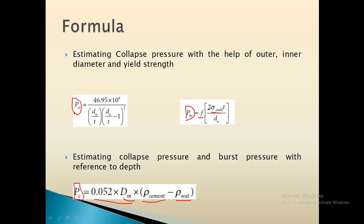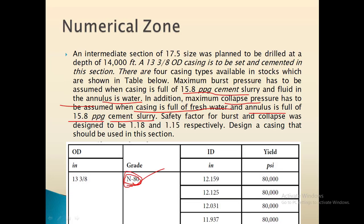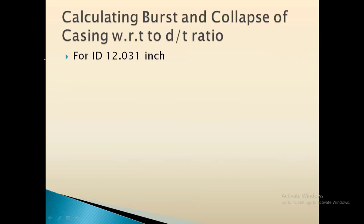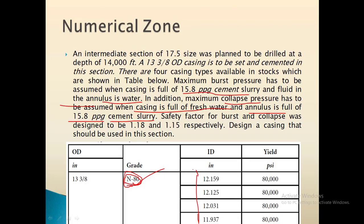Before proceeding, note that the question does not mention any axial force applied to the well, so we do not need to use the equivalent yield strength formula. The question directly specifies the collapse formula to use. Now, jumping to the next slide — calculating burst and collapse pressure with respect to the d/t ratio — I will demonstrate using inner diameter 12.031 inches to explain the estimation process.